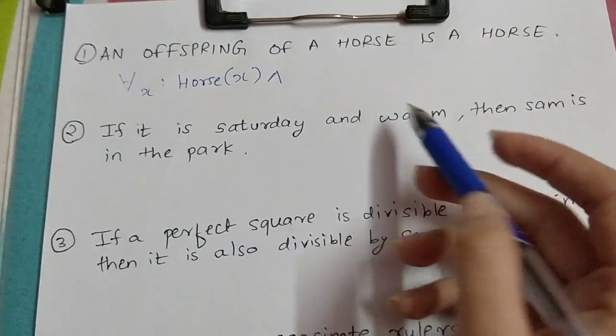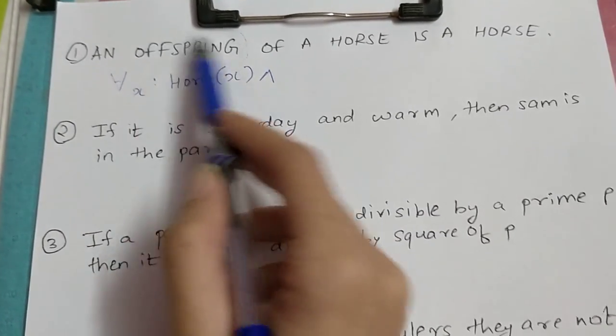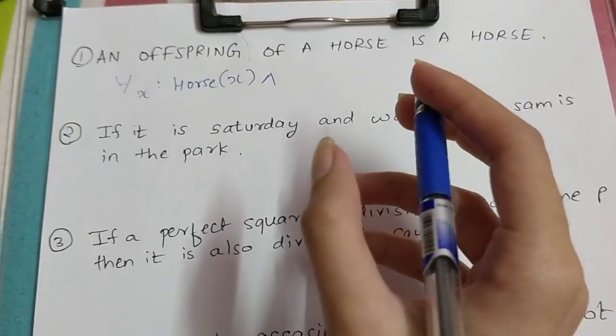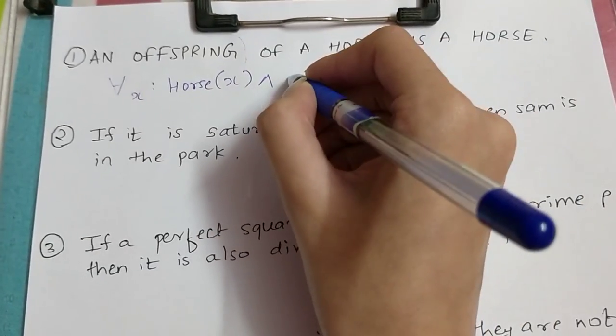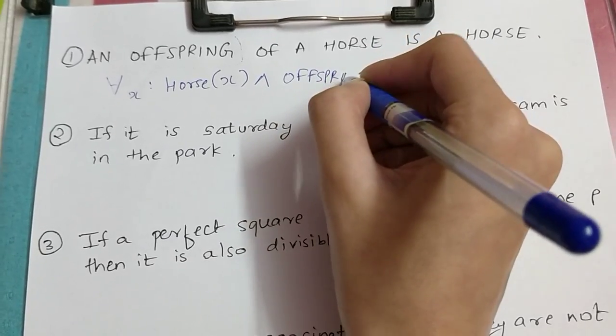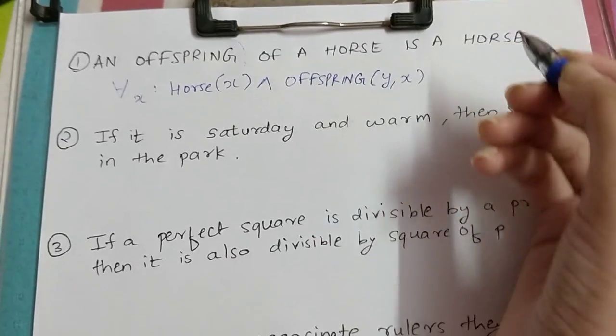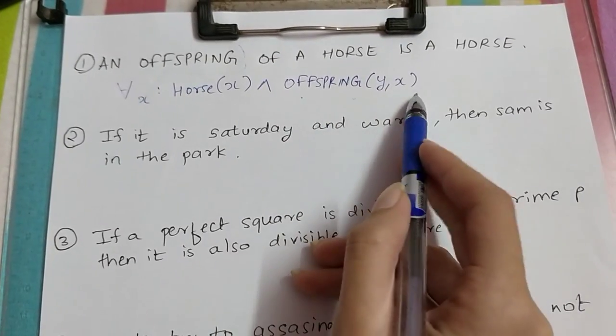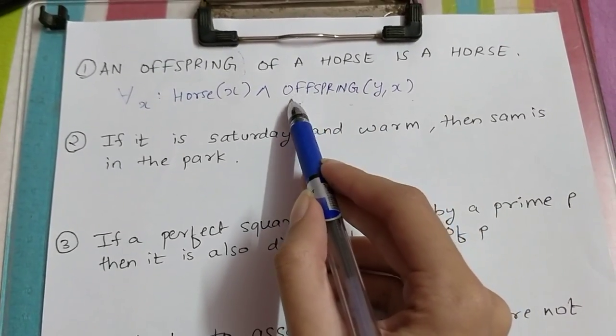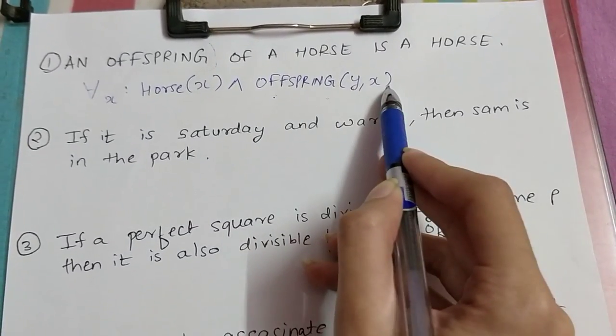Then we are going to use a predicate that is offspring. Offspring is a relation, and hence that will become a predicate. Offspring(Y, X). We can also consider predicate as a function. When I write offspring(Y, X), it means Y is an offspring of X.